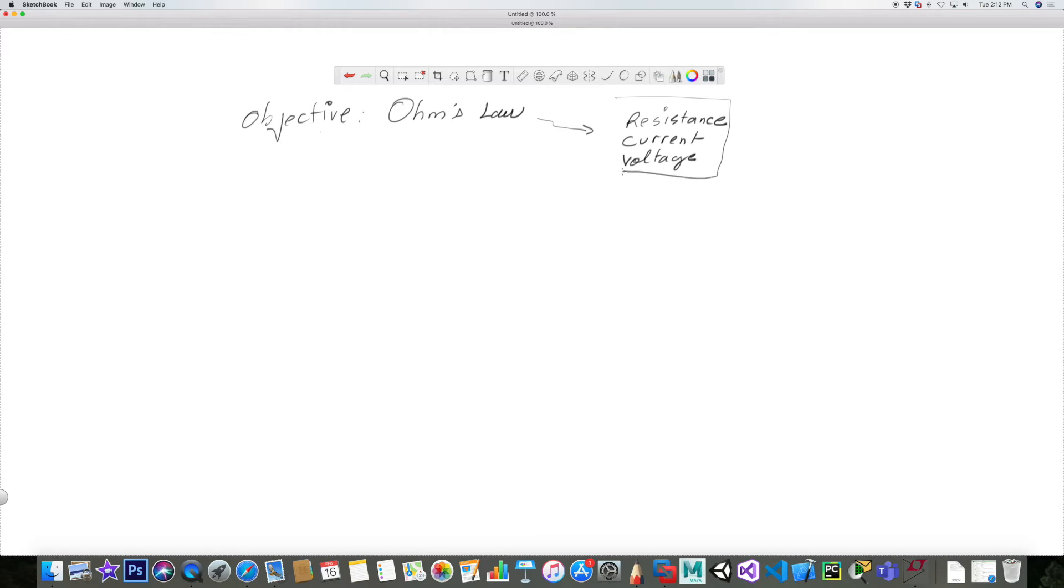And that formula - let's say we want to figure out what the voltage is. We would write V for voltage equals R, which is for resistance, times I, which is for current.